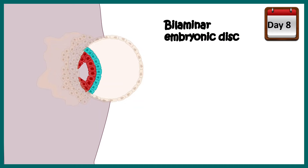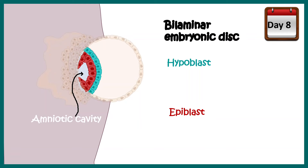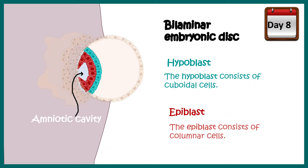The bilaminar embryonic disc has two layers: the hypoblast and the epiblast. The hypoblast is composed of cuboidal cells, while inside the epiblast, the amniotic cavities start forming. The epiblast cells are columnar in nature, whereas hypoblast cells are cuboidal. At day 8, we can appreciate that heterogeneity starts appearing from a previously homogeneous cell pool, at least in terms of morphology.